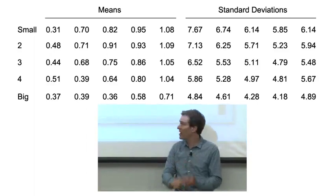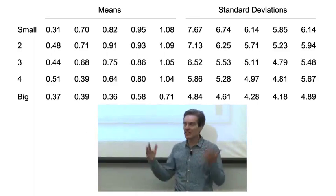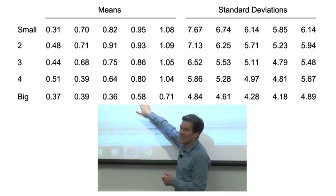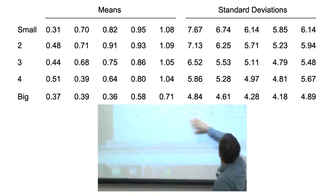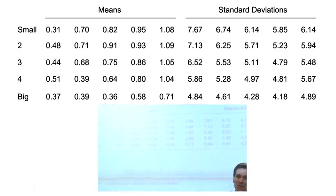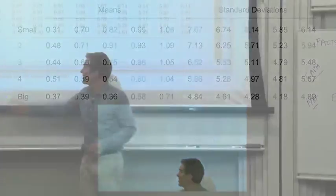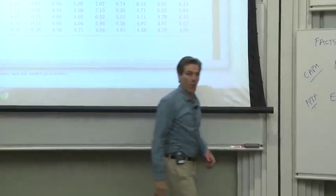So question one, is there a variation in average return between those categories? Yes, huge. 0.37% per month here, 1.08% per month there, a factor of three. You get three times better return up here than you do down there. Wow!